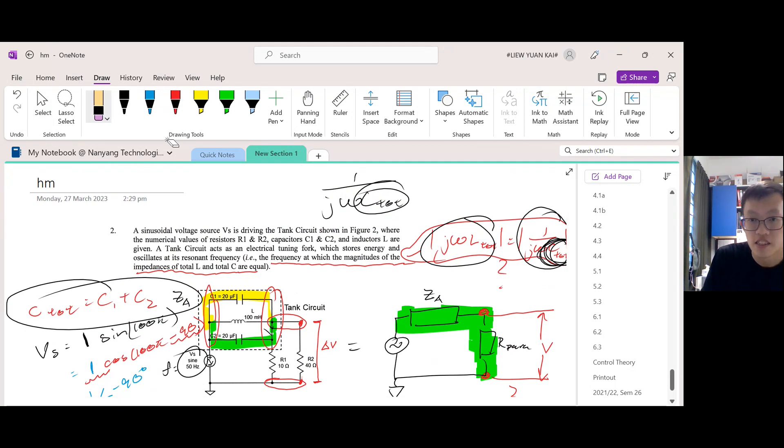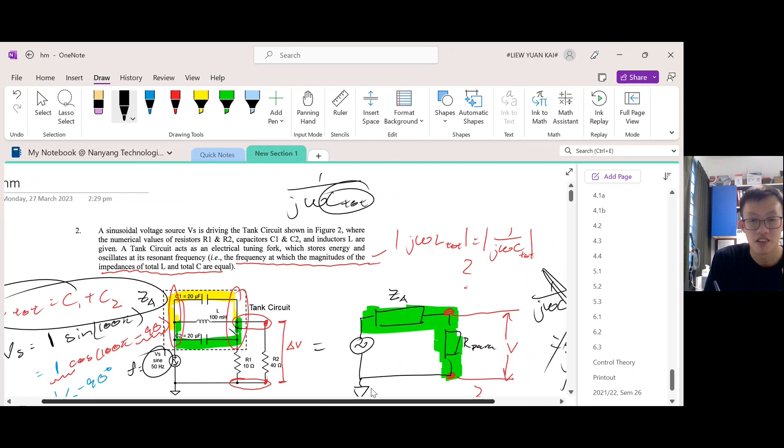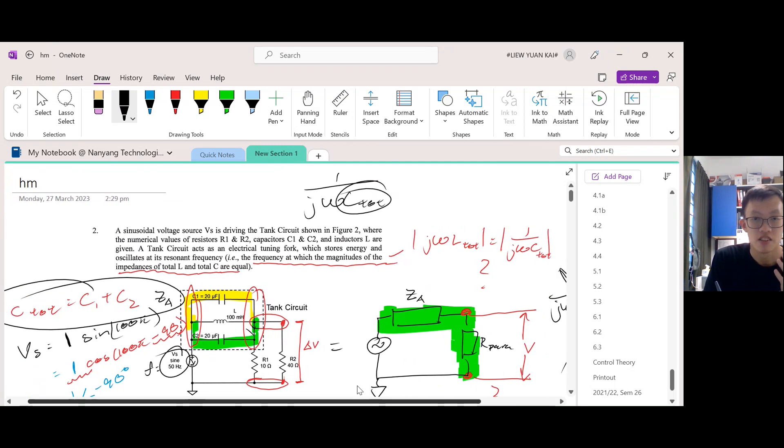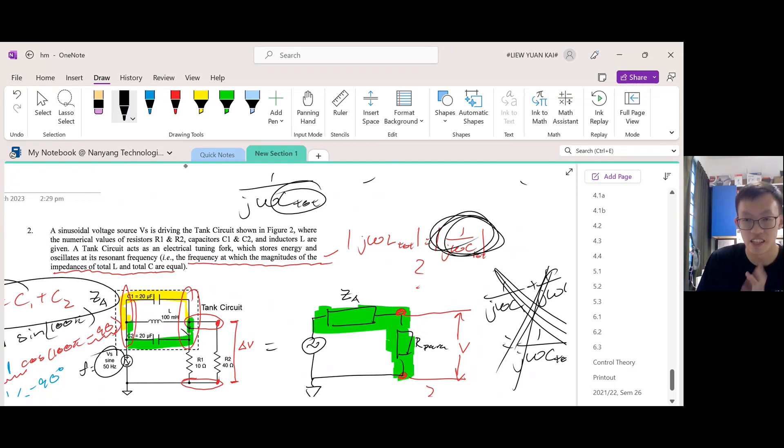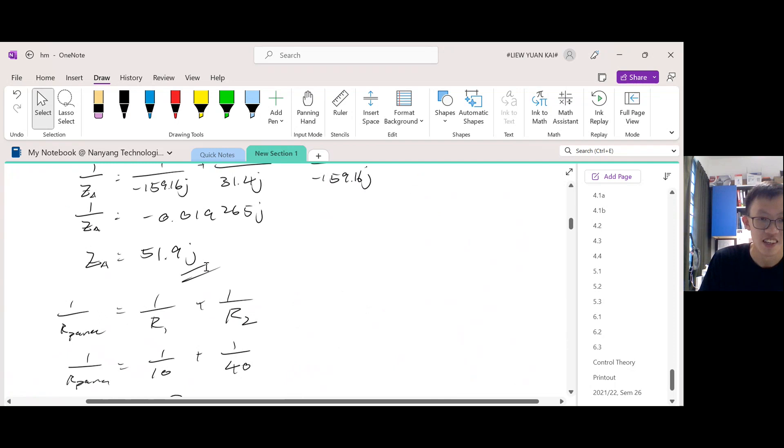So the magnitude for the impedance of the total L must be equal to the magnitude of the total impedance for the capacitors. Yes, this is still true. What I wrote here is still true. The mistake that I made was how I calculated the impedance of the capacitors.